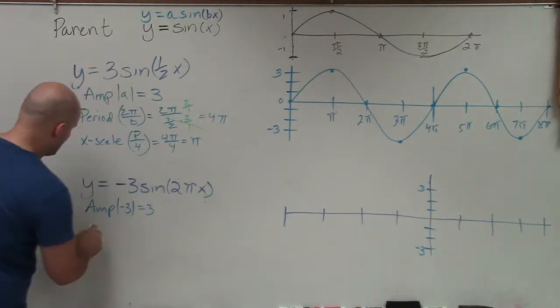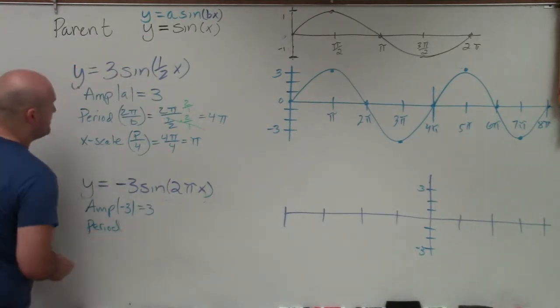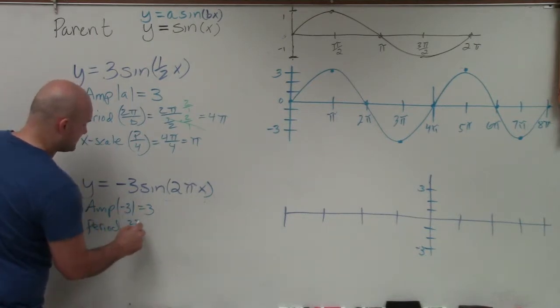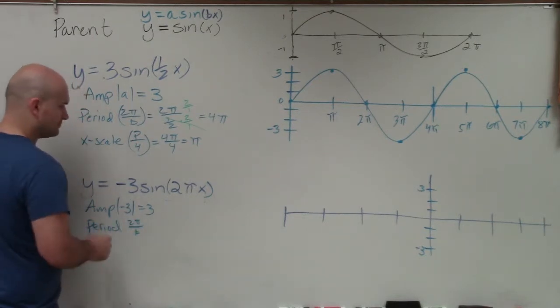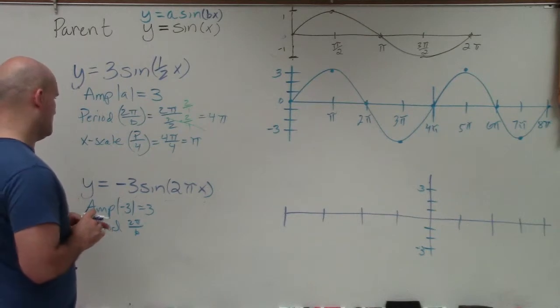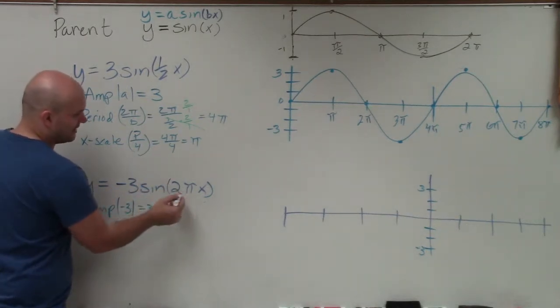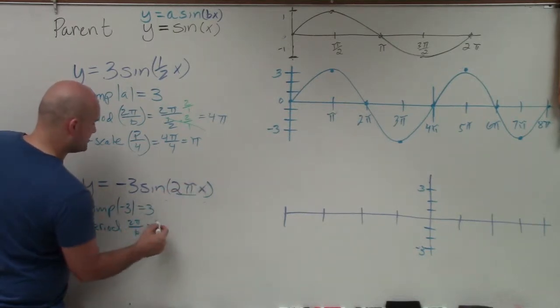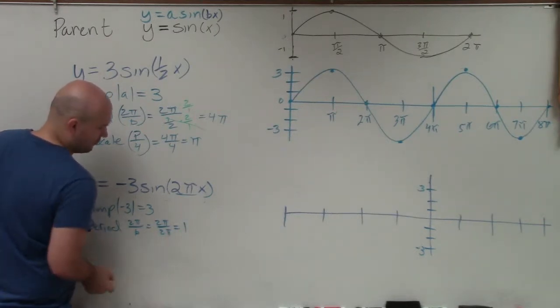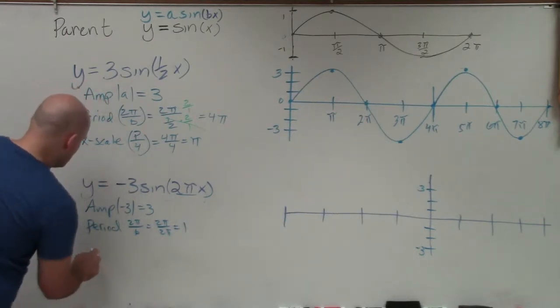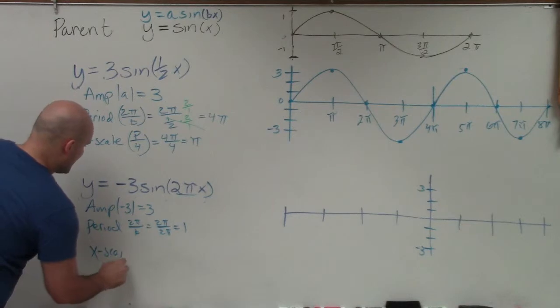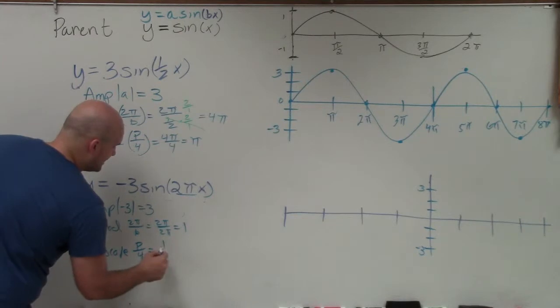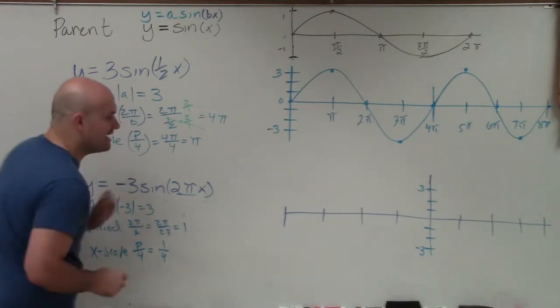But we can determine what the period is and x scale here before all that. So the period, again, is going to be 2 pi divided by b. Well, here you can see that my b, is whatever is being multiplied by x, is actually 2 pi. So that becomes 2 pi divided by 2 pi. Well, that's just going to equal 1. Then I do my x scale, which again is going to be your period divided by 4. Well, my period in this case is 1. So I just divide that by 4, and I get 1 fourth.